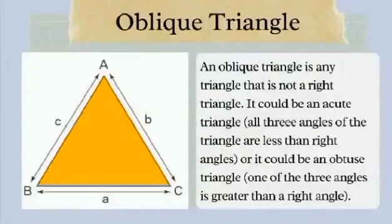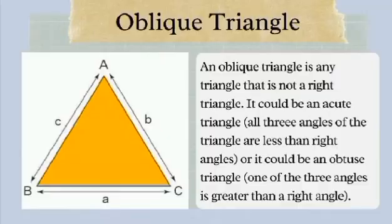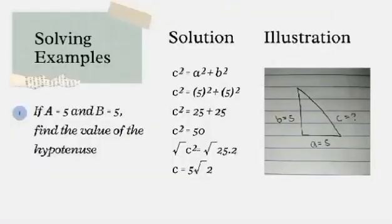An oblique triangle is a triangle that is not a right triangle. It could be an acute triangle, where all three angles are less than right angles. Or it could be an obtuse triangle, where one of the three angles is greater than a right angle.